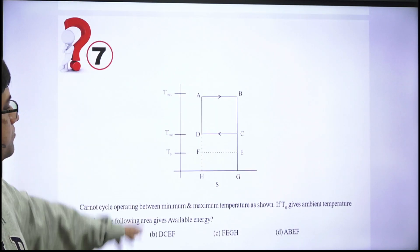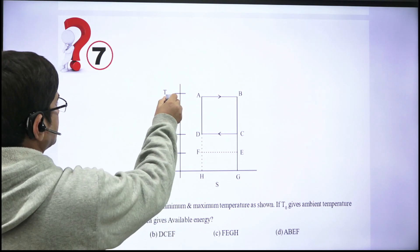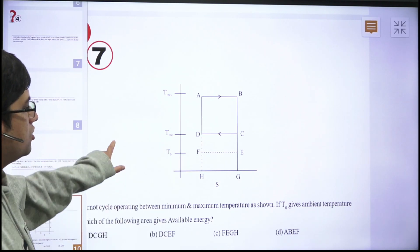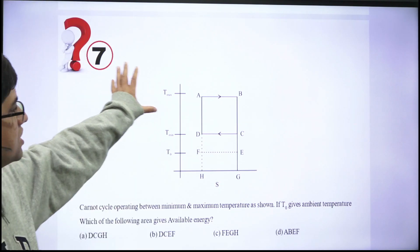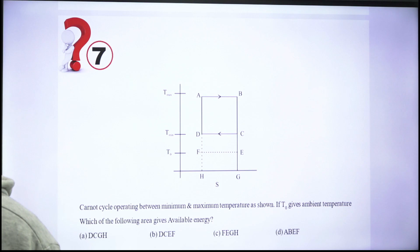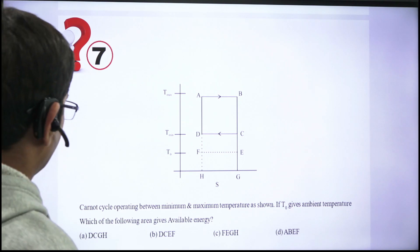Question 7: A Carnot cycle is given working between a maximum temperature and a minimum temperature, with T-naught also indicated. You have to identify which area on the diagram represents available energy and which area represents unavailable energy — that is, how available and unavailable energies are related in this diagram.